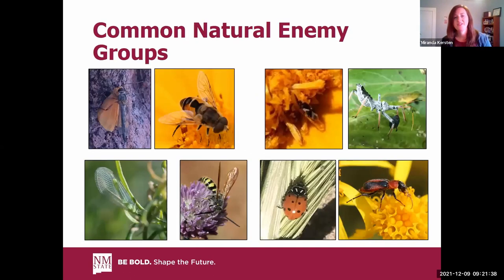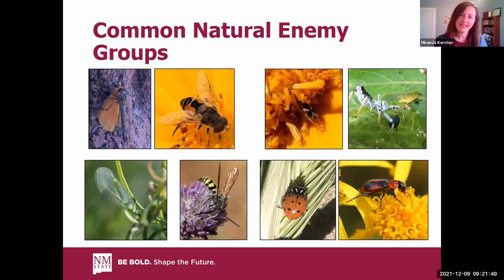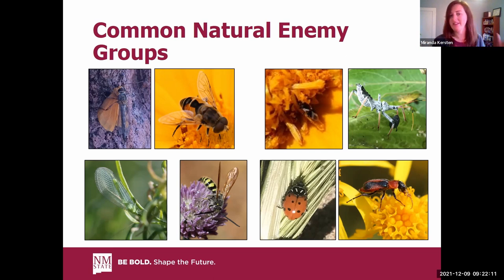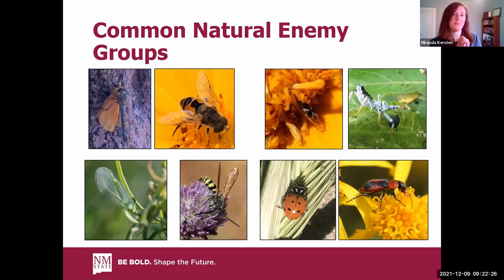Here are some of the more common natural enemy groups, which include different flies, lacewings, wasps, minute pirate bugs, assassin bugs, and some beetles. Natural enemies can range in a variety of sizes — minute pirate bugs are just a couple of millimeters long, while mantids are much larger. Most of them are generalists, feeding on a large variety of insects. I'm going to talk specifically about the groups we include in our research projects.